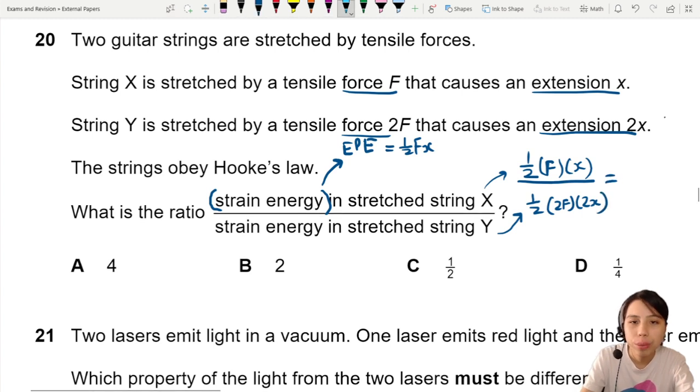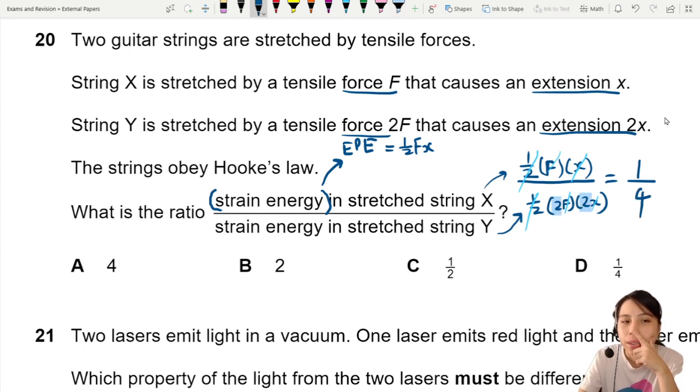Okay, let's do some cancellations. Half and half is gone. Fx and Fx cancel. What we have left is 1 over 2 times 2. Oh, this 2 and this 2, so that will be 1 over 4. The best choice we can choose here is 1 over 4, which is this answer.